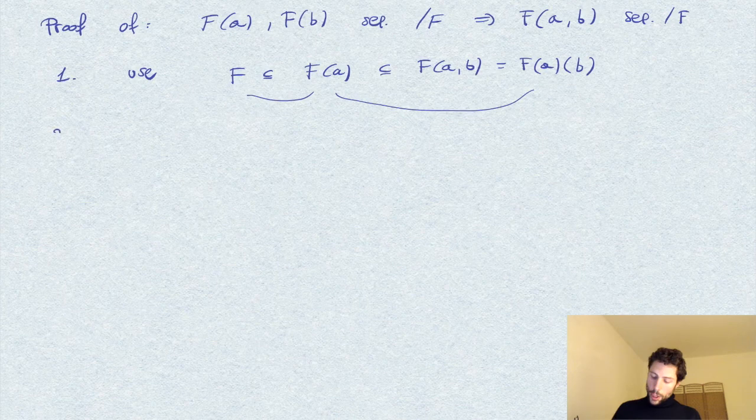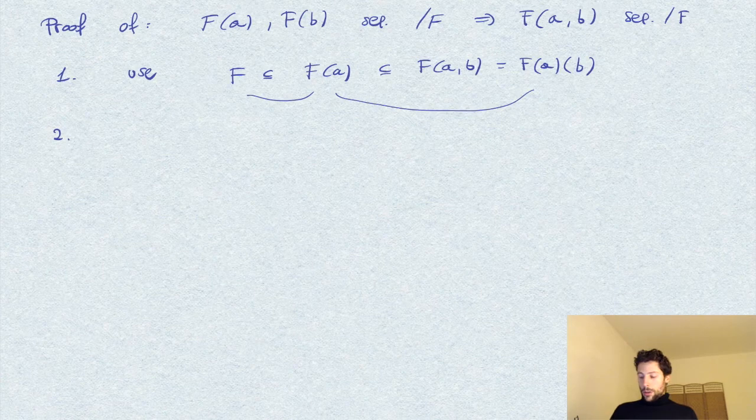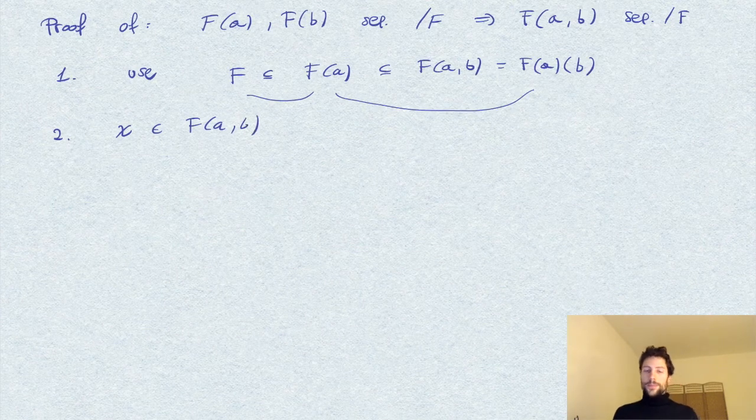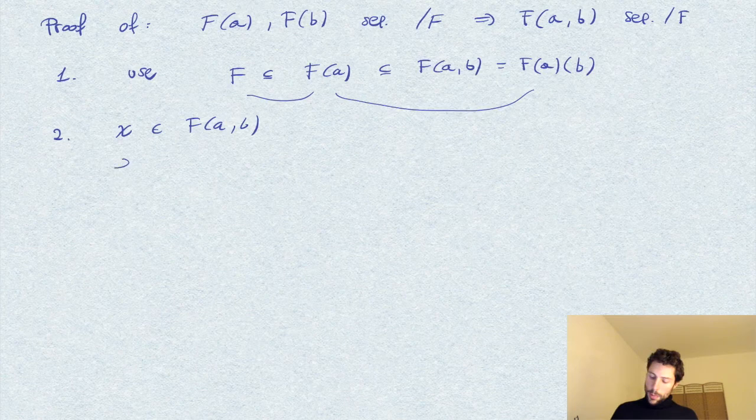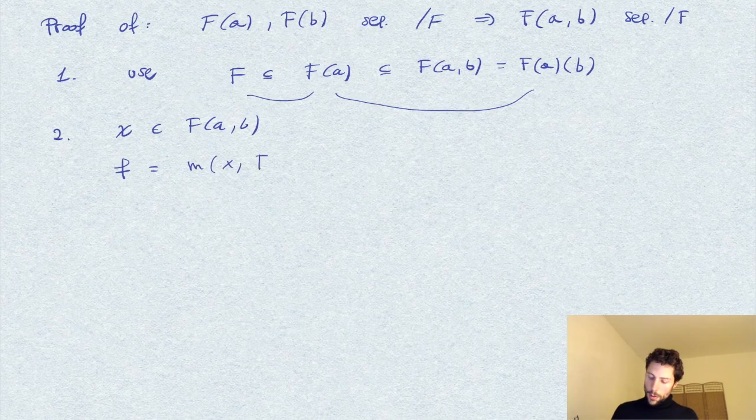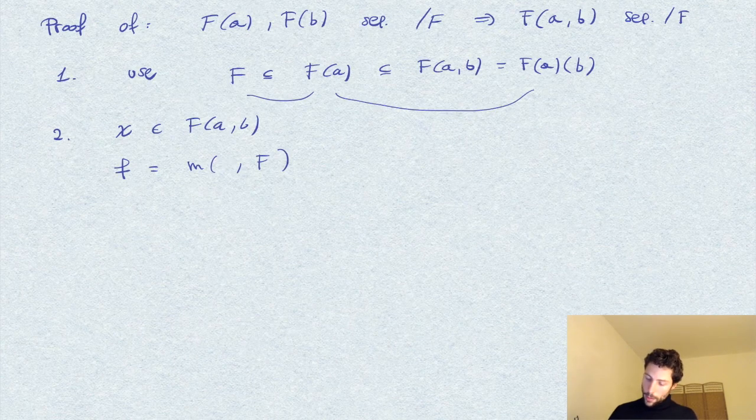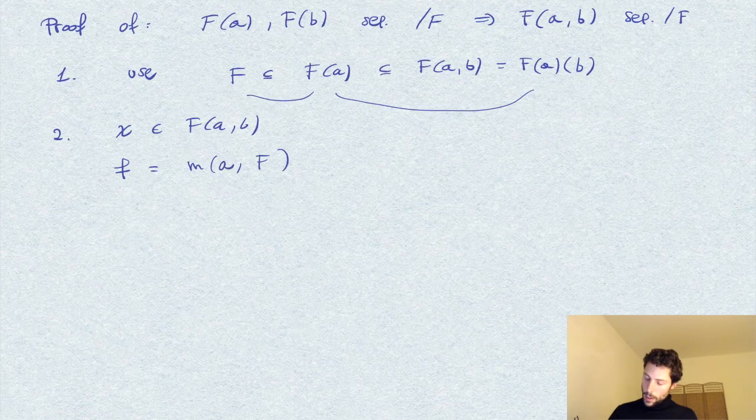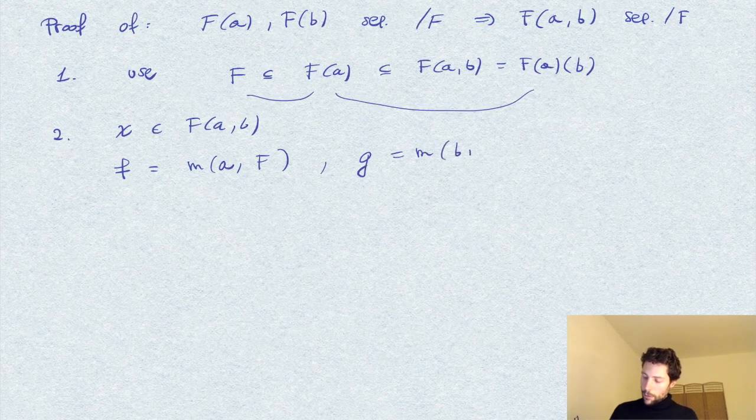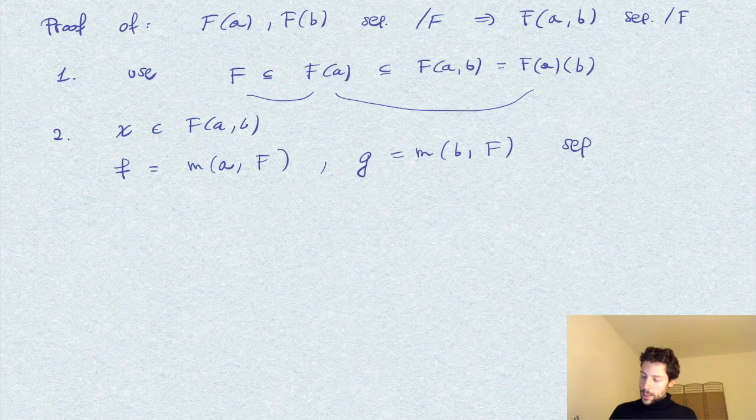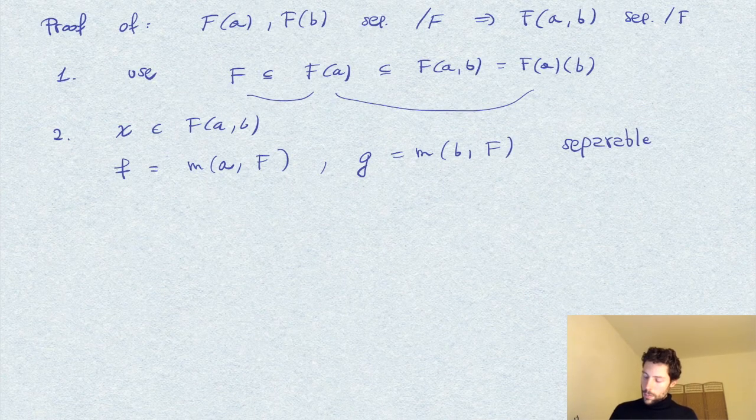So, if you don't use this more generally, we can do as follows. So, let's take an element in F of A B, and we denote by F, little f, the minimum polynomial of A over F, which is, of course, separable, and also the minimum polynomial of B over F, which are separable polynomials.